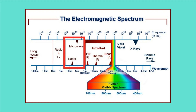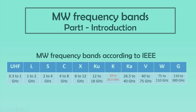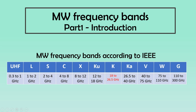Bear with me as this list is pretty long. As we can see here, the frequency range of Ultra-High Frequency or UHF is from 0.3 to 1 gigahertz; L band from 1 to 2 gigahertz; S band from 2 to 4 gigahertz; C band from 4 to 8 gigahertz; X band from 8 to 12 gigahertz; KU band from 12 to 18 gigahertz; K band from 18 to 26.5 gigahertz; KA band from 26.5 to 40 gigahertz; V band from 40 to 75 gigahertz; W band from 75 to 110 gigahertz; and finally G band from 110 to 300 gigahertz.